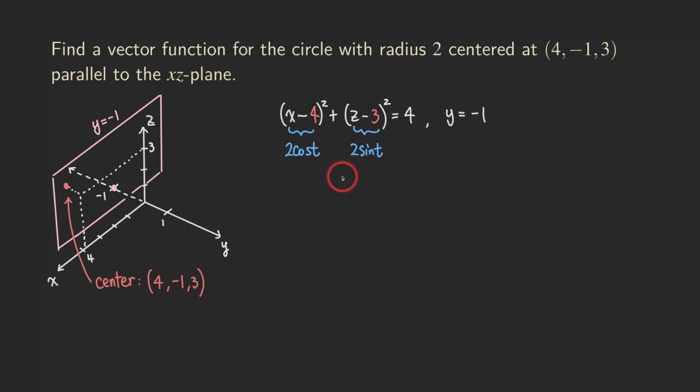Okay, so now we can start writing down our parametric equations. We have x - 4 equals 2 cos t. Okay, and then the other one is z - 3 equals 2 sin t.